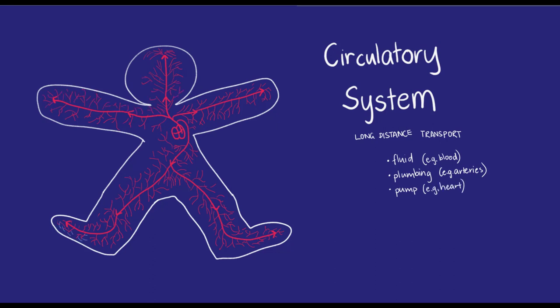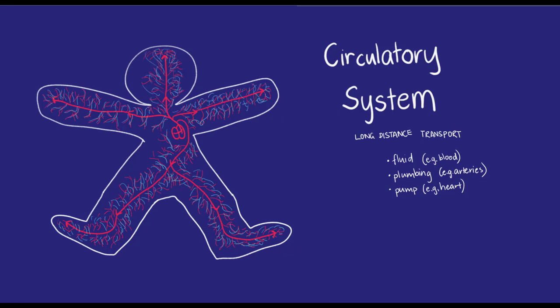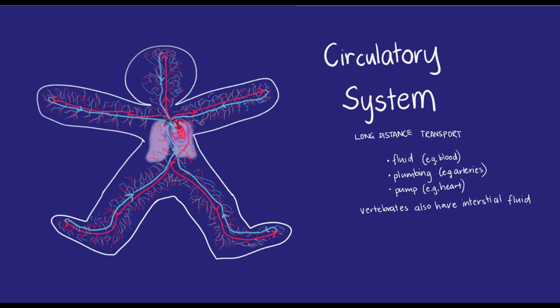Vertebrates, including humans, earthworms, squids, and octopuses have blood which travels around the body and cells that sit in interstitial fluid. The interstitial fluid acts as a go-between, both for molecules coming or going between blood and other cells. This is called a closed circulatory system, or cardiovascular system.